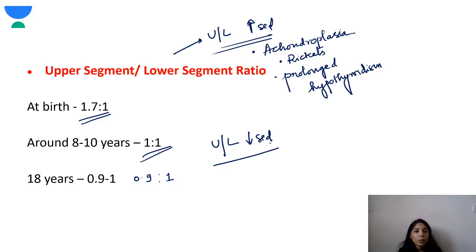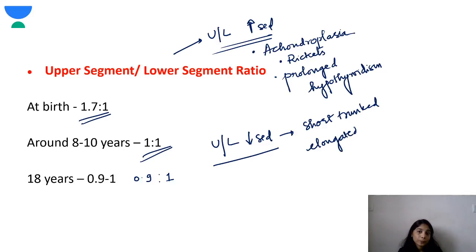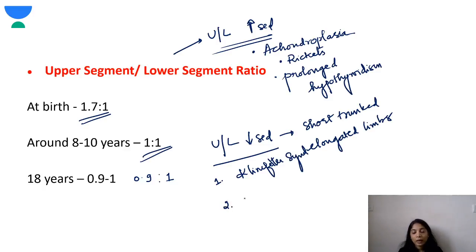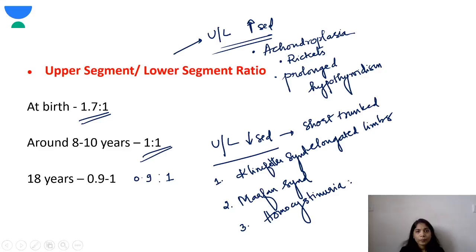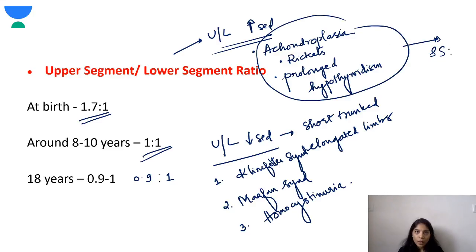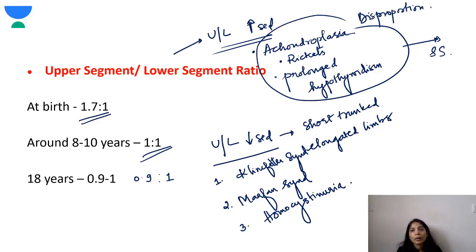Conditions where the US:LS ratio is decreased include those with short trunk or elongated limbs. These conditions include Klinefelter syndrome, Marfan syndrome, and Homocystinuria. These are the most common conditions associated with a decreased US:LS ratio. This is why the US:LS ratio is important — it helps identify the cause of disproportionate short stature, allowing you to rule out growth hormone deficiency and consider conditions like achondroplasia.